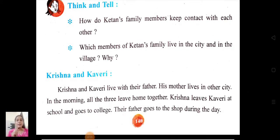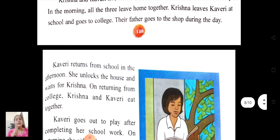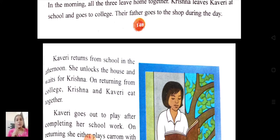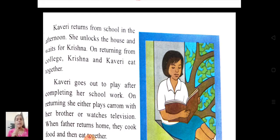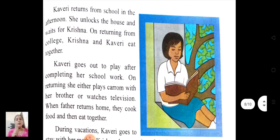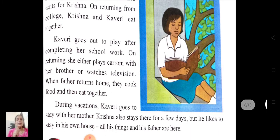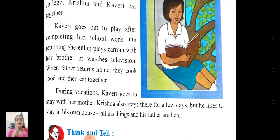Krishna and Kaveri live with their father. His mother lives in another city. In the morning all three leave home together. Krishna leaves Kaveri at school and goes to college. Their father goes to the shop during the day. Kaveri returns from school in the afternoon, unlocks the house and waits for Krishna. On returning from college, Krishna and Kaveri eat together. Kaveri goes out to play after completing her school work. On returning, she either plays carrom with her brother or watches television. When father returns home, they cook food and then eat together. During vacation, Kaveri goes to stay with her mother, and Krishna also stays there for a few days, but he likes to stay in his own house where all his things and his father are.